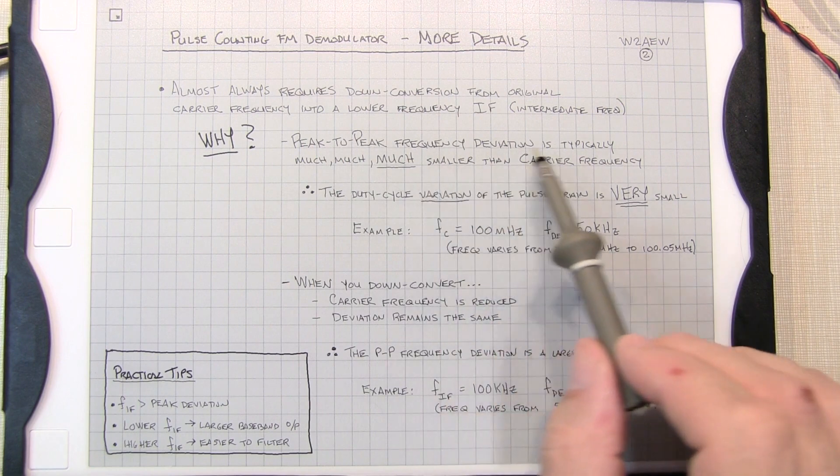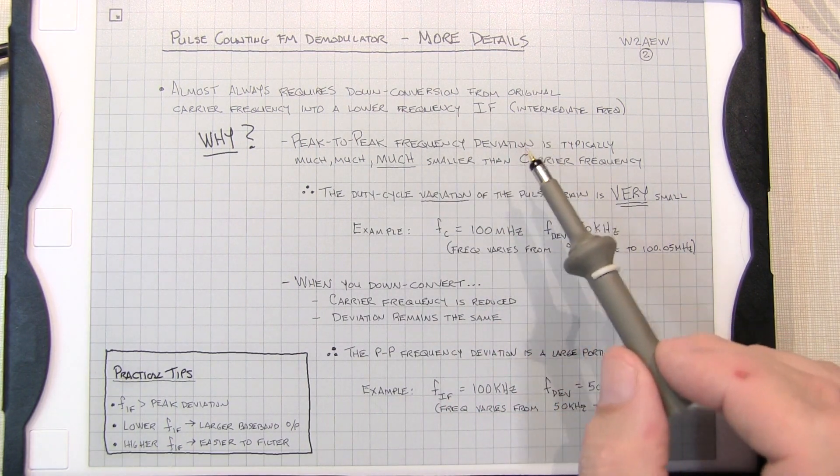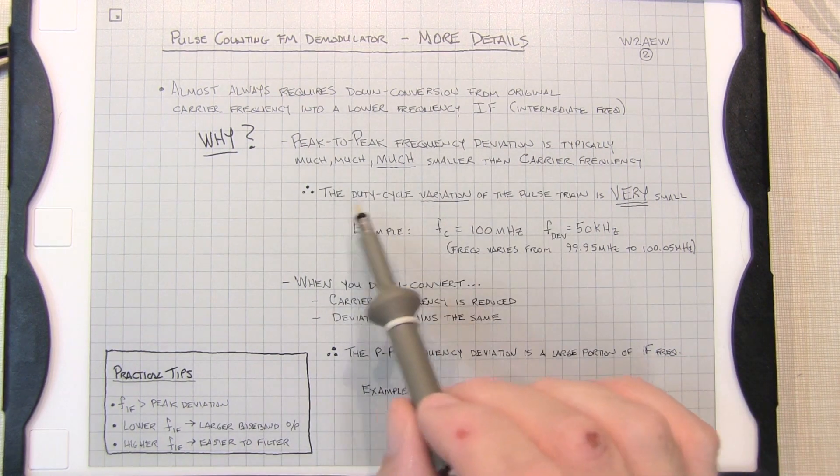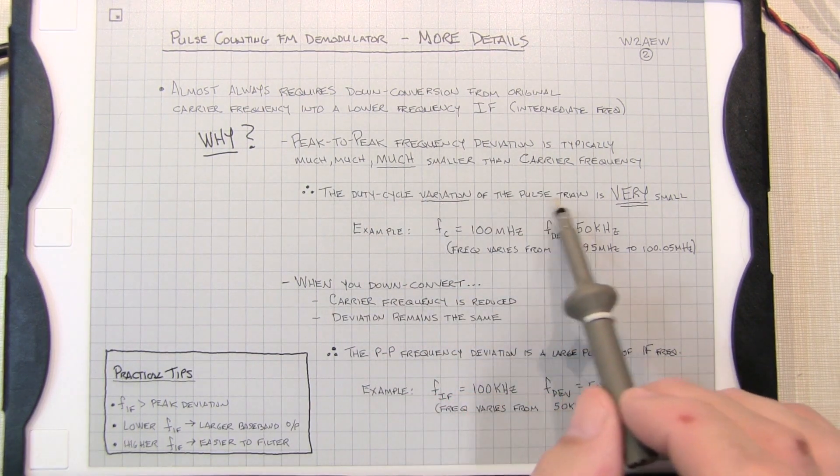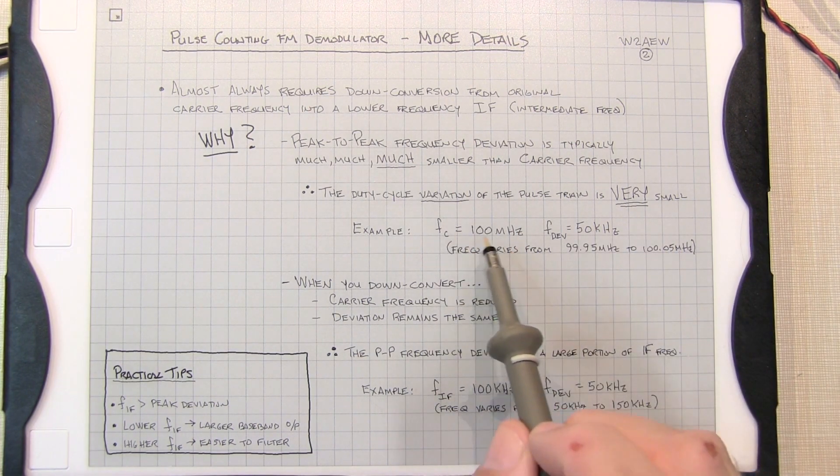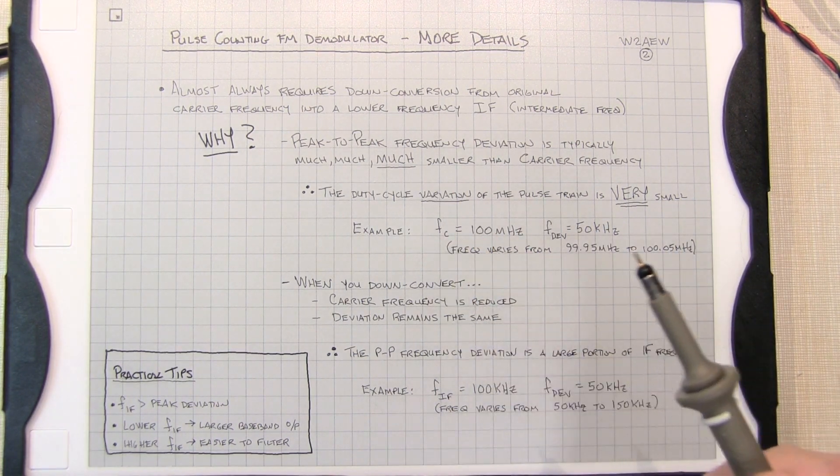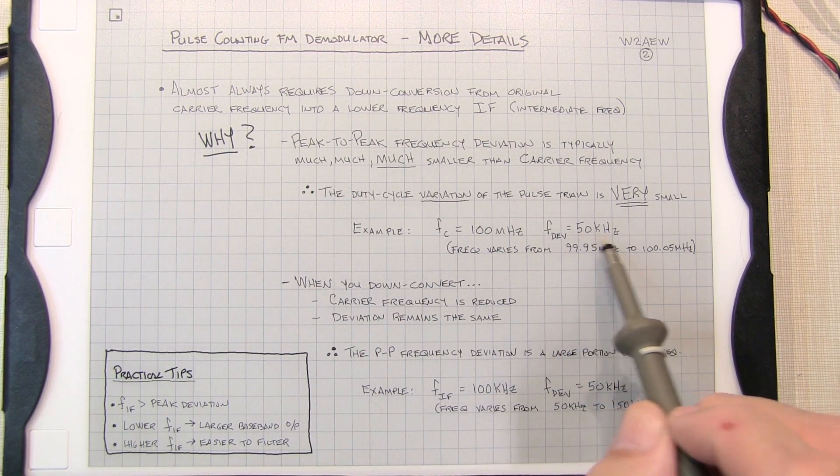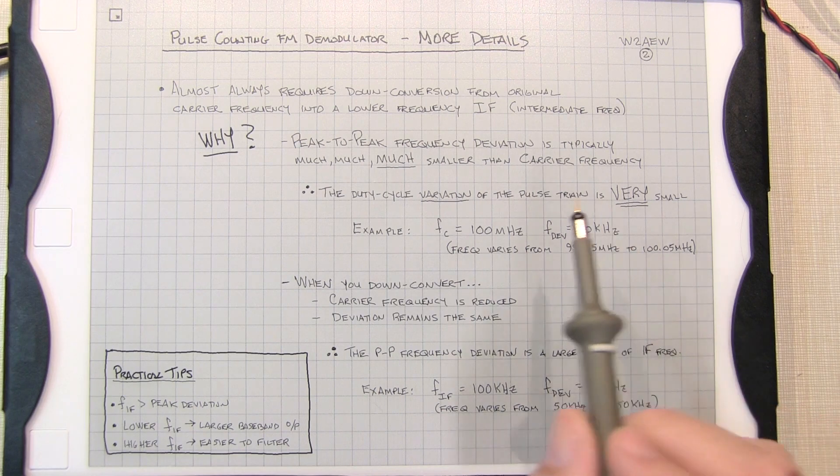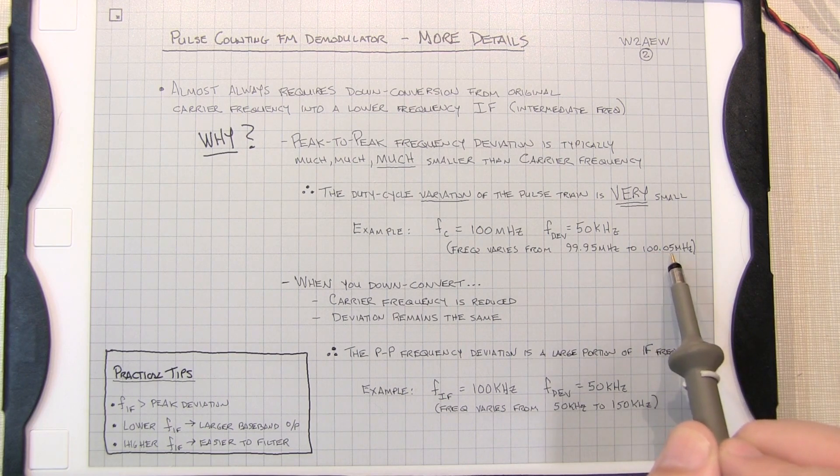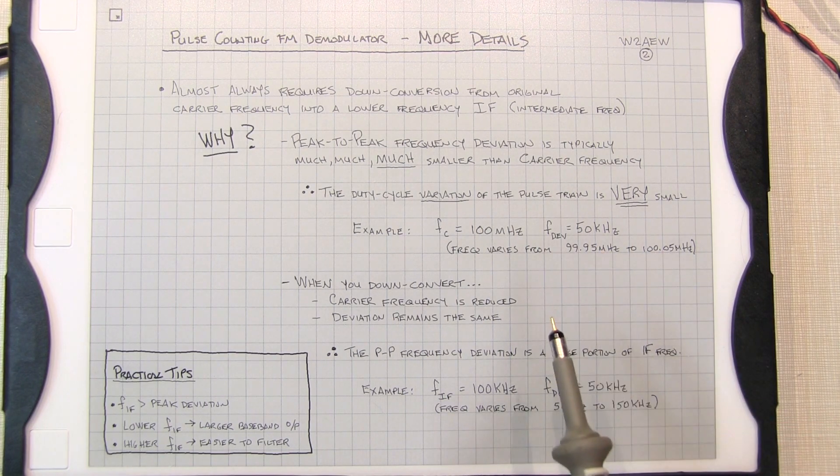Now the peak-to-peak frequency deviation of an FM signal is typically much smaller than the carrier frequency. Therefore the duty cycle variation of the pulse train is going to be very small. So for example, if we had a carrier frequency of 100 megahertz like near the FM broadcast band, a frequency deviation of plus or minus 50 kilohertz, that means that the carrier frequency is going to vary between 99.95 megahertz to 100.05 megahertz—a very small deviation.